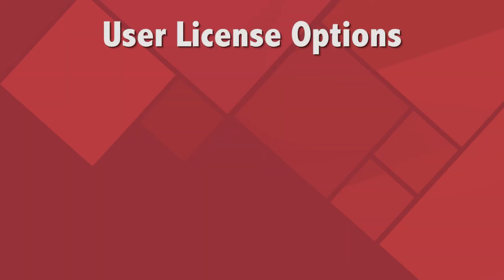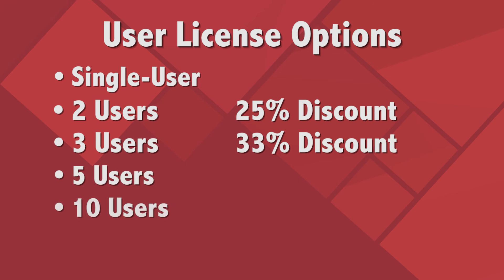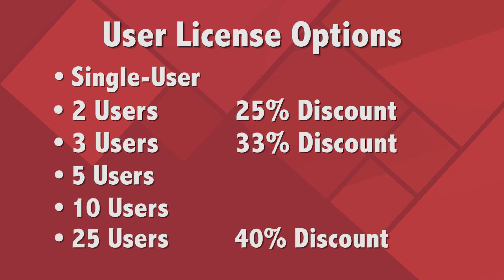Before you purchase your online subscription, you will need to decide on the number of user licenses to purchase to best accommodate your organization's needs. You can purchase either a single user license, or choose among several multiple user licenses, which offer deeper discount prices ranging from a 25% discount for 2 users, a 33% discount for 3 users, and nearly a 40% discount for a 25 user license.